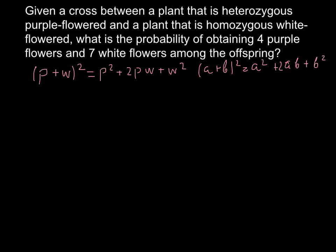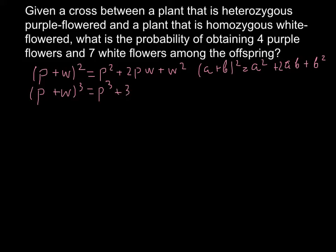We can use the same formula to calculate probabilities for any number of variables. The exponent stands for the total number of offspring. For example, let's expand (P + W)³: we get P³ + 3P²W + 3PW² + W³.